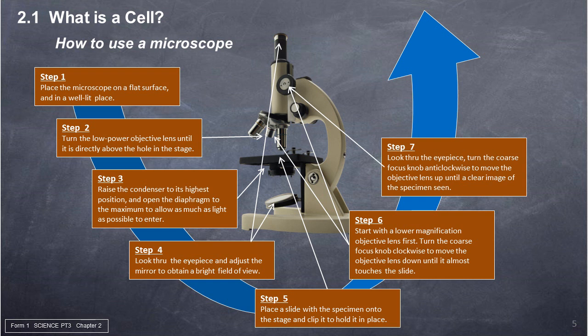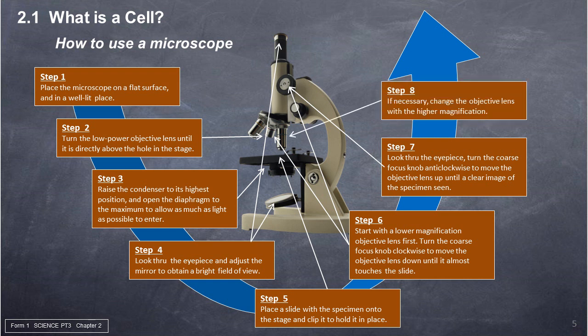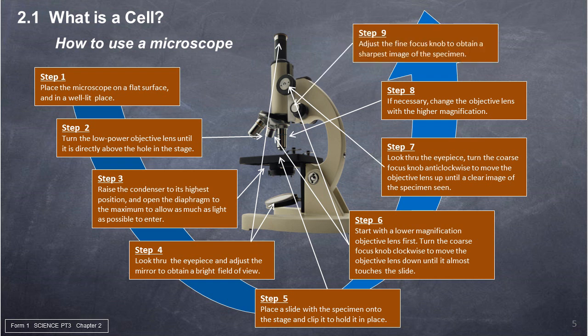Step 7: Look through the eyepiece, turn the coarse focus knob anticlockwise to move the objective lens up until a clear image of the specimen is seen. Step 8: If necessary, change the objective lens to a higher magnification. Step 9: Adjust the fine focus knob to obtain the sharpest image of the specimen.